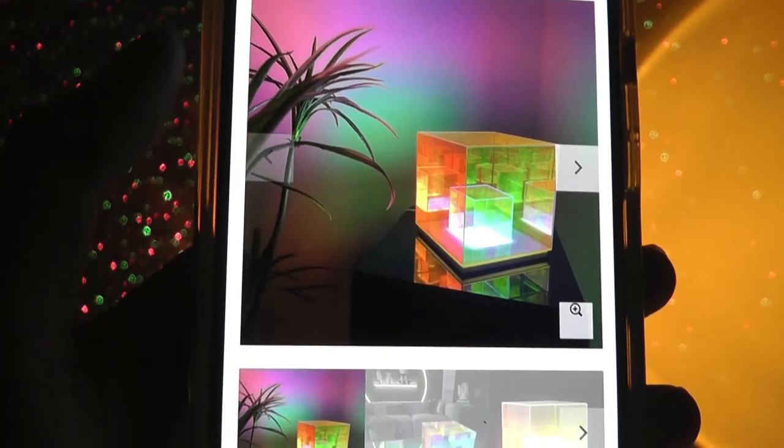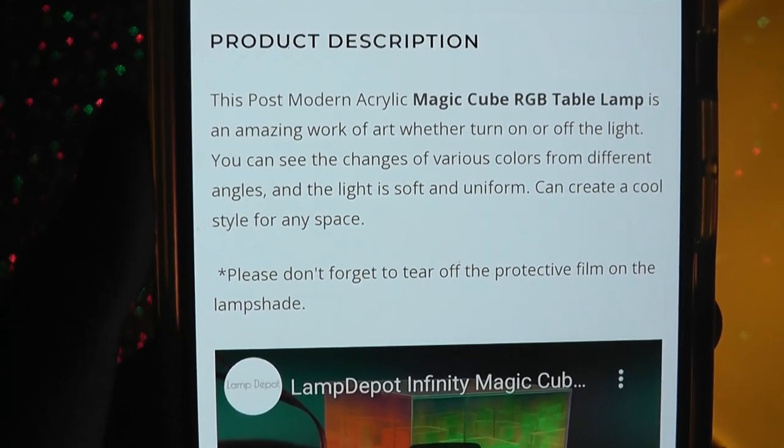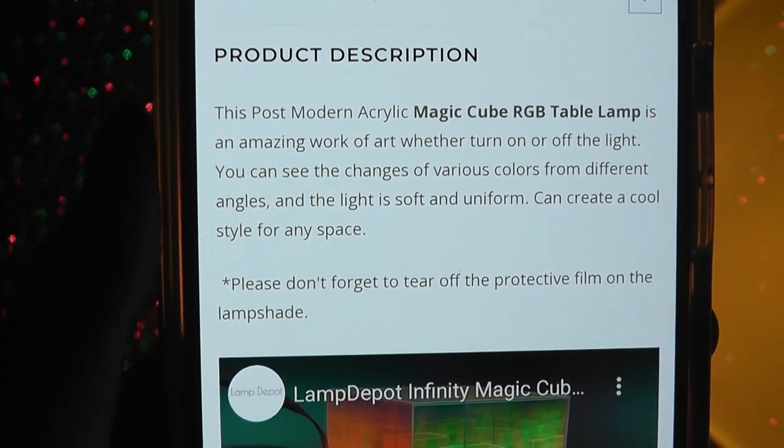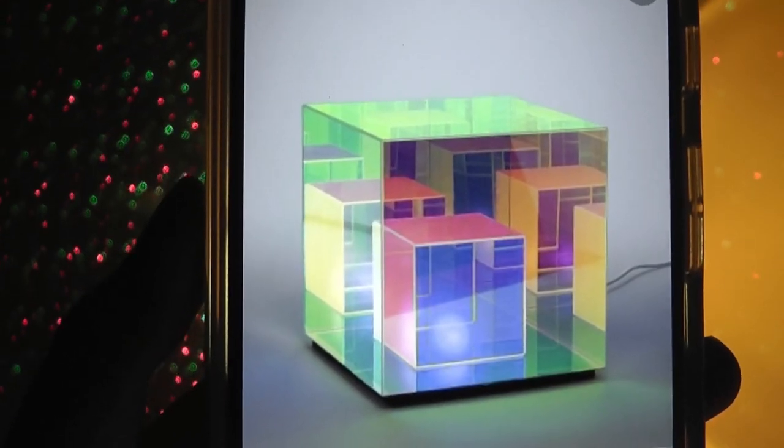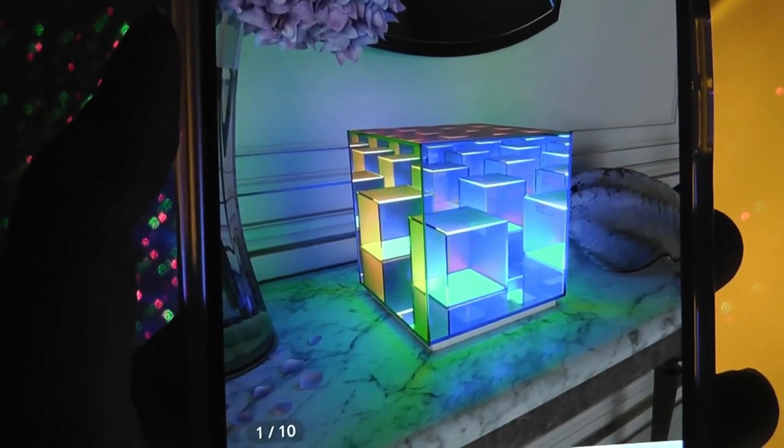So it's called the Magic Cube Table Light. The description is calling this a post-modern acrylic Magic Cube RGB table lamp. If you look at it from different angles.